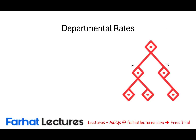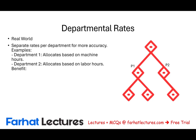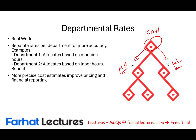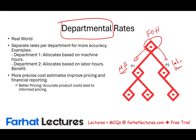If the single plant-wide rate isn't working, we need to allocate across various departments. In the real world, most companies have multiple products and multiple departments. What we do is allocate some factory overhead to Department 1 and some to Department 2. Department 1 might use machine hours as its allocation base, while Department 2 uses labor hours. The benefit of this departmental method is it's more precise — each department uses a different overhead rate rather than one single rate for the whole company, leading to more accurate product costing and more informed pricing.